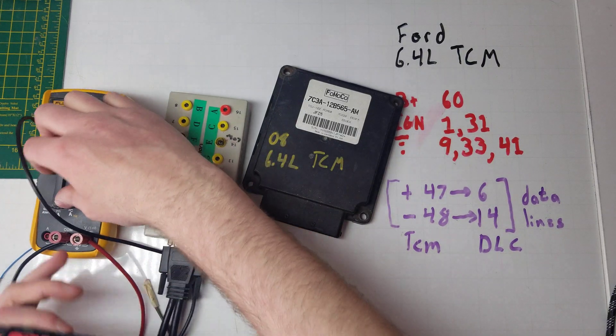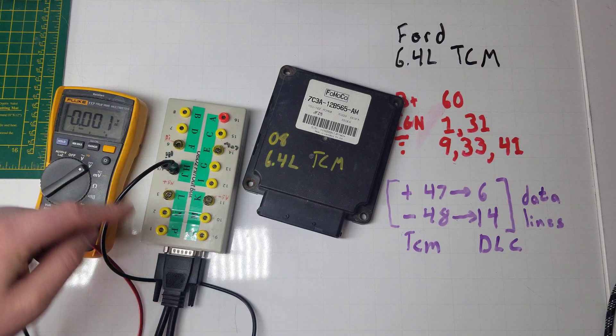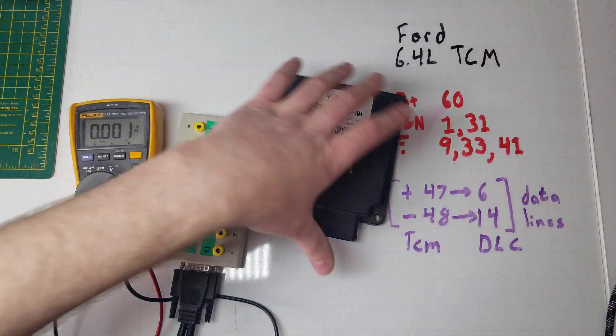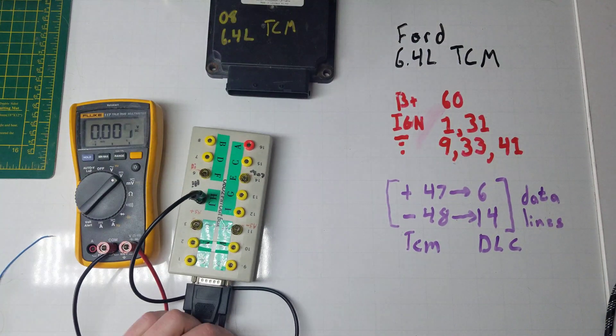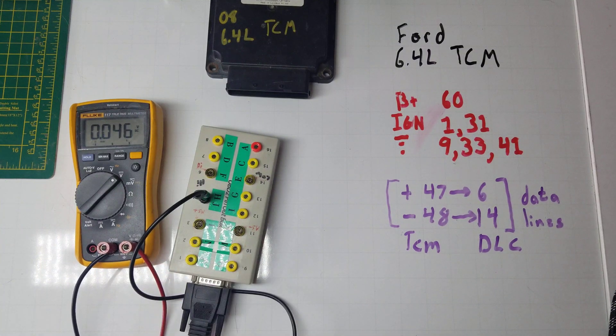It's a multimeter DC volt. I'm going to tie into my ground on my breakout box. Let's power this thing up with the ignition on.